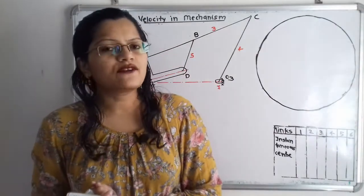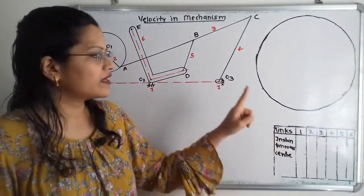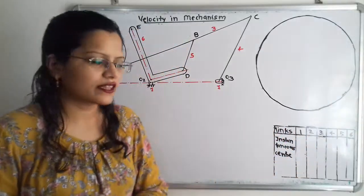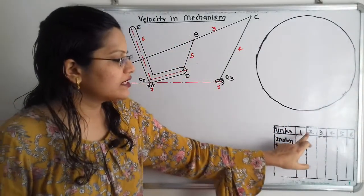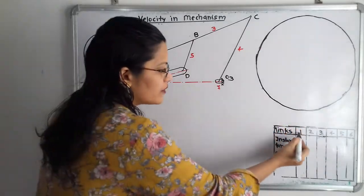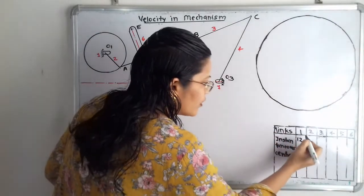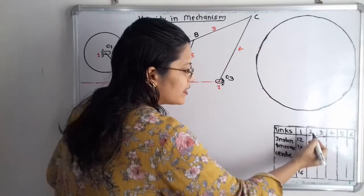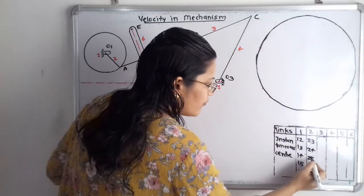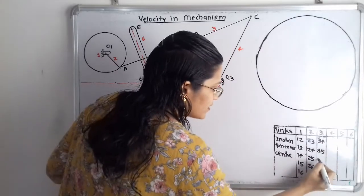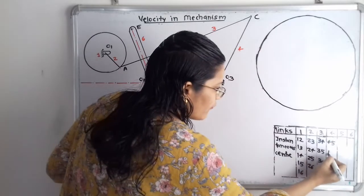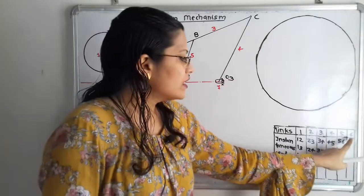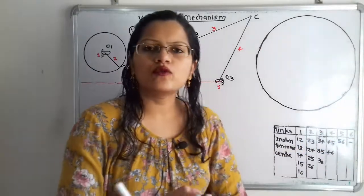To identify each instantaneous center, we plot a table. With 6 links, we list: link 1 connects with 2, 3, 4, 5, 6; link 2 connects with 3, 4, 5, 6; link 3 with 4, 5, 6; link 4 with 5, 6; and link 5 with 6. We do not go backward — for example, 6 with 1 is already listed as i16 — so we move only in the forward direction.